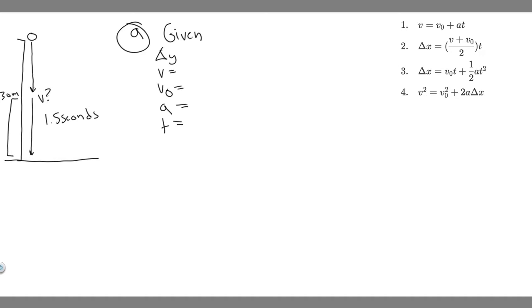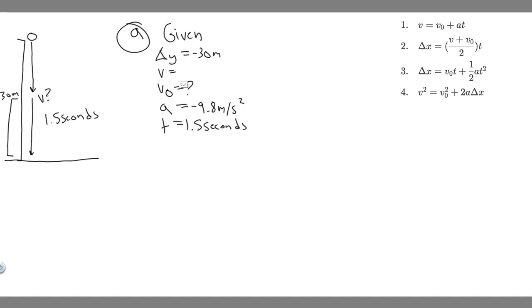The object travels 30 meters in that last interval, so delta y equals minus 30 meters, since it's traveling downwards. The acceleration is minus 9.8 m/s² — the acceleration due to gravity. The time t for this interval is 1.5 seconds. We're solving for v-sub-0, the initial velocity of this interval. The final velocity v is also unknown, so we mark both as question marks.